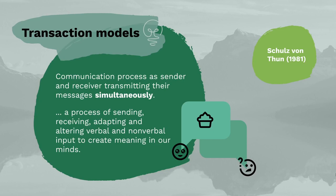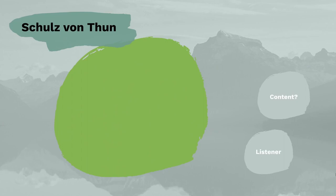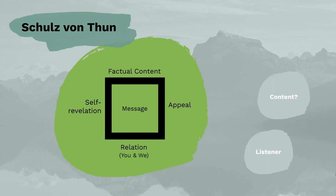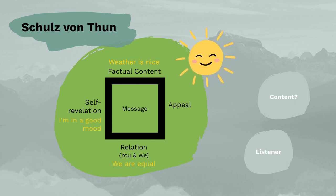A fine example of a transactional communication model is that of Schultz von Thun, who developed a model representing human communication as a square. The four sides of the square are: factual content, self-revelation, the appeal, and the relation — which can be further subdivided into the 'you message' and the 'we message'. Every time we speak, all four sides of the square are revealed and equally relevant. Saying 'it's a beautiful day today' communicates not only factual information about the weather, but also that one is in a good mood, that the listener is viewed as an equal, and that the listener is invited to have a chat.